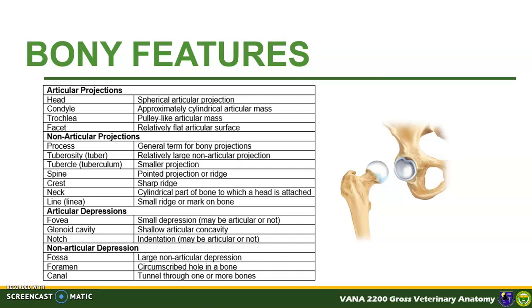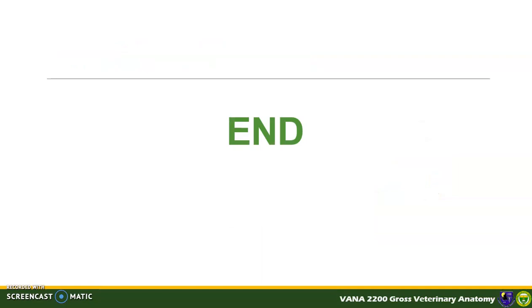For your convenience, here is a summary of the bony features together with their basic descriptions; this is also present in the module materials provided. This ends the Part 1 lecture of this module. I hope you are now familiar with the basic anatomy of bones and its external features. You may now proceed to Part 2 of Module 2, which is focused on the anatomy of the skull.